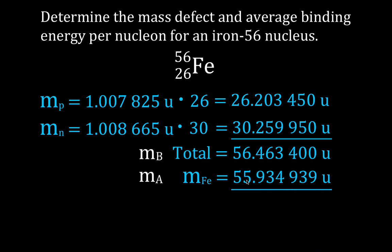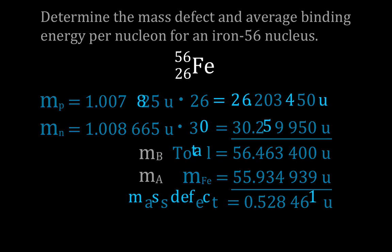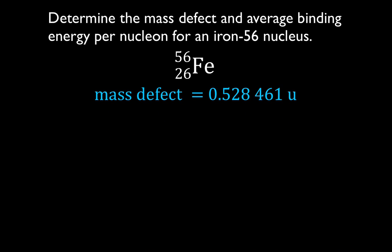You'll notice the mass after (55.934939 AMU) is a little less than the mass before. Subtracting these two values gives us the mass defect: 0.528461 atomic mass units.